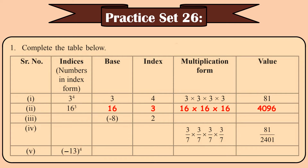Look at the third one. The indices form is not given, but the base and the index are given. Looking at this, I can frame my indices. So it is minus 8 raised to 2. The multiplication form will be minus 8 into minus 8. 8 into 8 is 64, and minus into minus is plus, so the answer is 64.